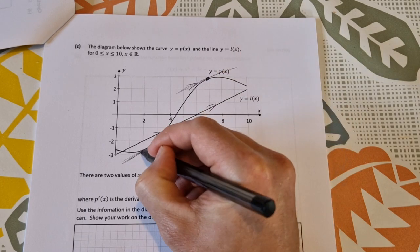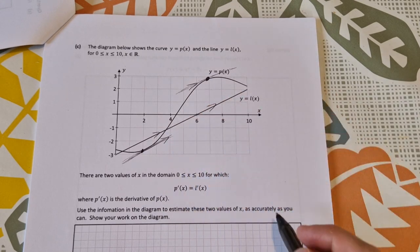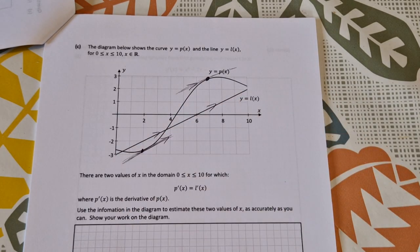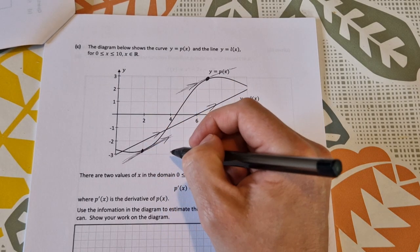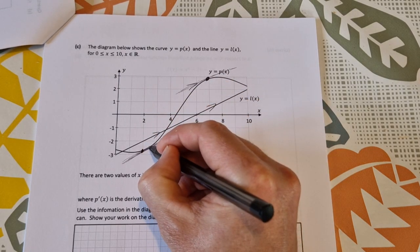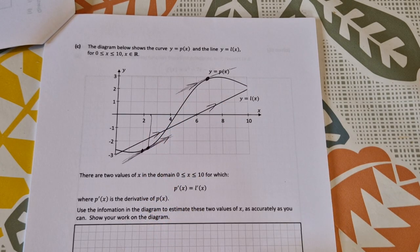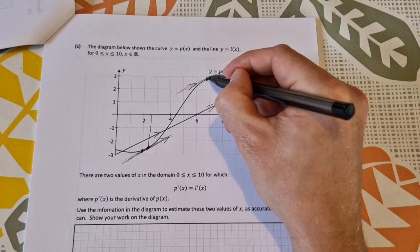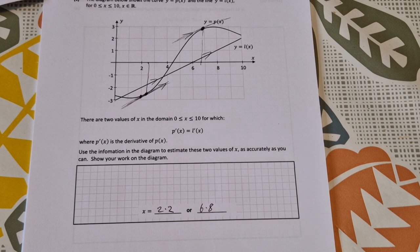It says do it as accurately as possible. I'm not sure what percentage error they're giving you. The answers they give in the marking scheme are actually 2.2, so it's here at 2.2, and 6.8, which is here at 6.8. It doesn't say on the marking scheme how much accuracy they give you. But it says as accurate as possible. If you got 2.2 and 6.8, you're definitely getting the full marks, which is 15.